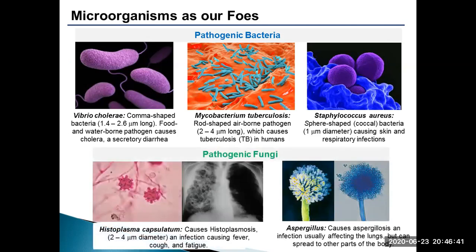While some fungi can be eaten safely or are used in the production of antibiotics, others are poisonous. Among infectious fungi, Histoplasma capsulatum is an example which causes flu-like illness and lung disease. Histoplasmosis is the most prevalent fungal infection in North America. Aspergillus flavus is another pathogenic fungus best known for its colonization of cereal grains, legumes and tree nuts. This fungal pathogen causes Aspergillus ear and kernel rot. Inhalation of fungal spores of Aspergillus fumigatus can cause life-threatening pulmonary or sinus diseases.